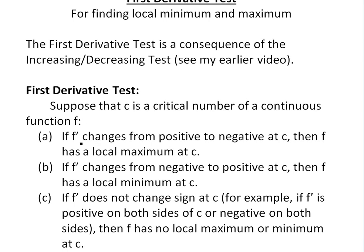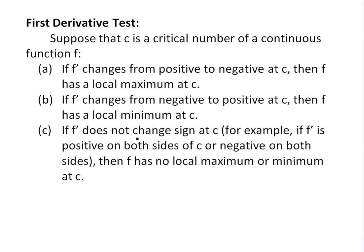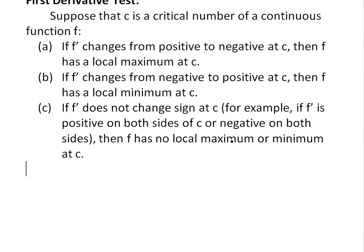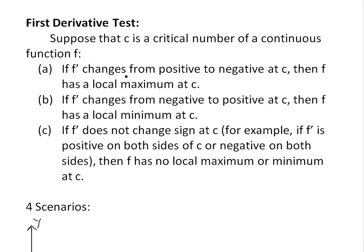Part A: if the derivative f prime changes from positive to negative at c, then f has a local maximum at c. If f prime changes from negative to positive at c, then f has a local minimum at c. But if f prime does not change sign at all — for example, if it's positive on both sides of c or negative on both sides — then f has no local max or minimum at c.